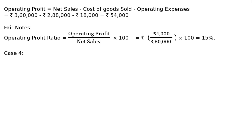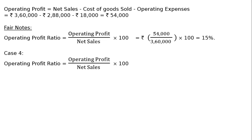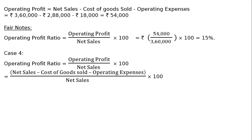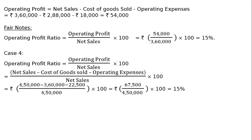Case 4: revenue from operations, cost of revenue from operations, and operating expenses are given. Operating profit ratio is equal to net sales minus cost of goods sold minus operating expenses, whole divided by net sales into 100. That is Rs. 4,50,000 minus Rs. 3,60,000 minus Rs. 22,500, whole divided by Rs. 4,50,000 into 100, equal to Rs. 67,500 upon Rs. 4,50,000 into 100, equal to 15%.